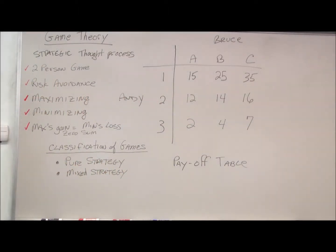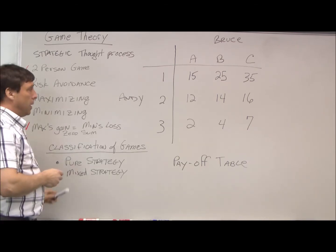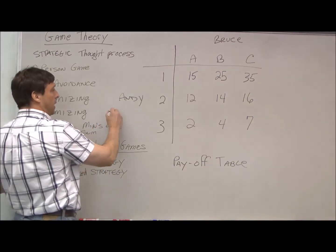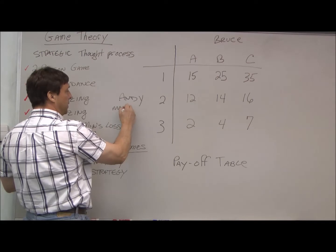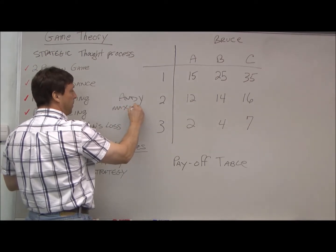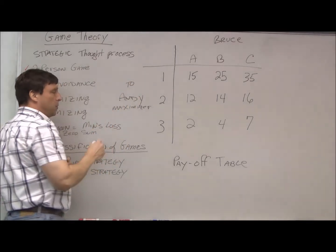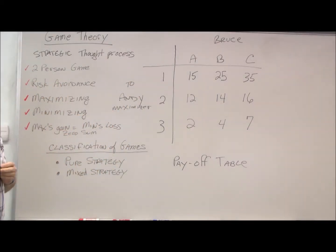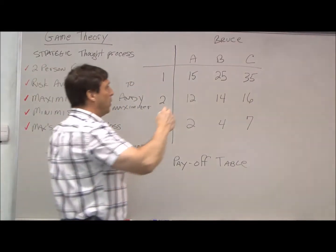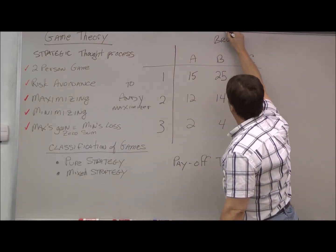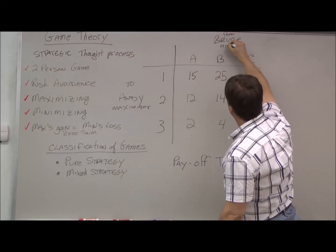Also, there's two players in this: the maximizing and the minimizing player. Andy, in this case, would be the maximizer, and it's sometimes also called the "to." This is the person that will be getting the payout. Bruce is called the "from," or the minimizer.